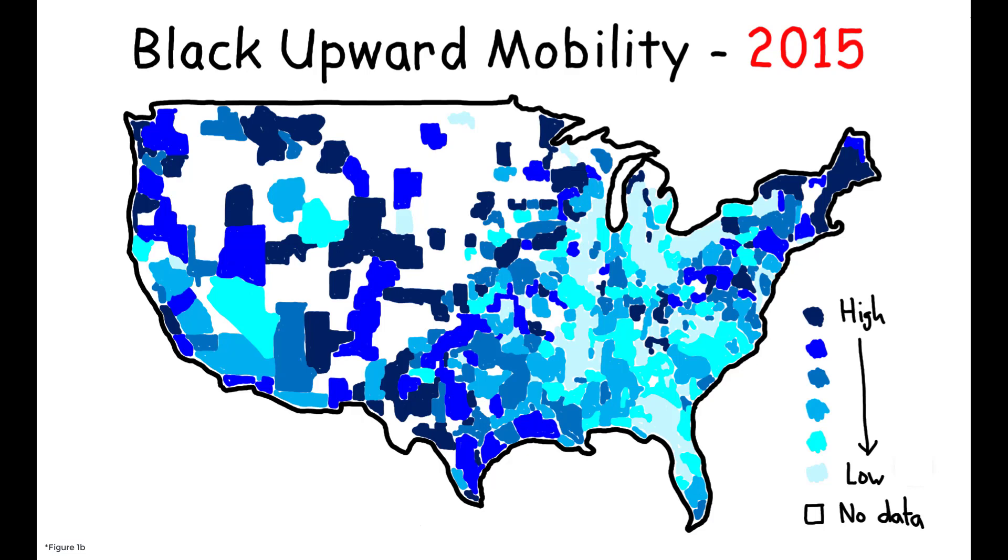In particular, many locations that exhibited good outcomes for black children in 1940 now exhibit some of the worst outcomes, and there is no longer a clear advantage for black children growing up outside of the south.